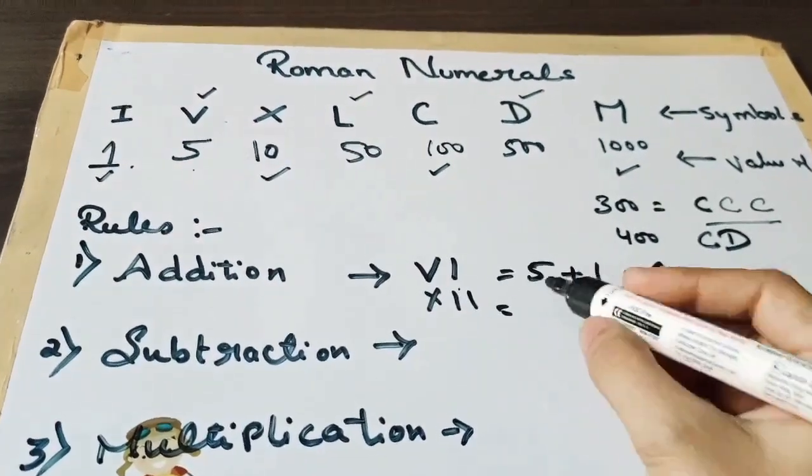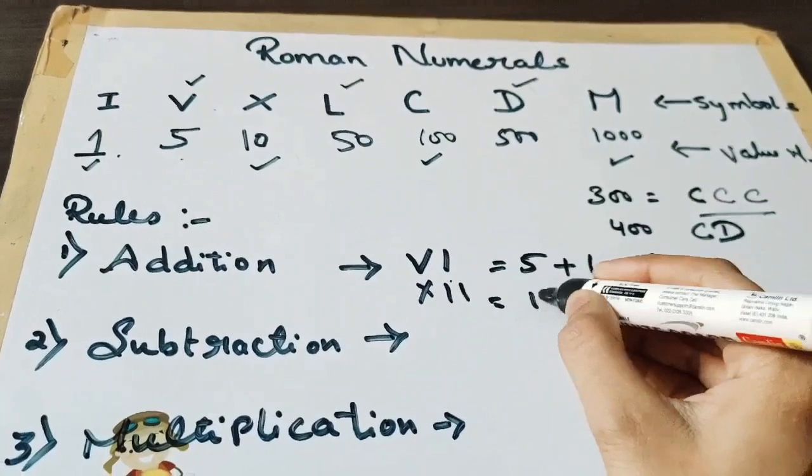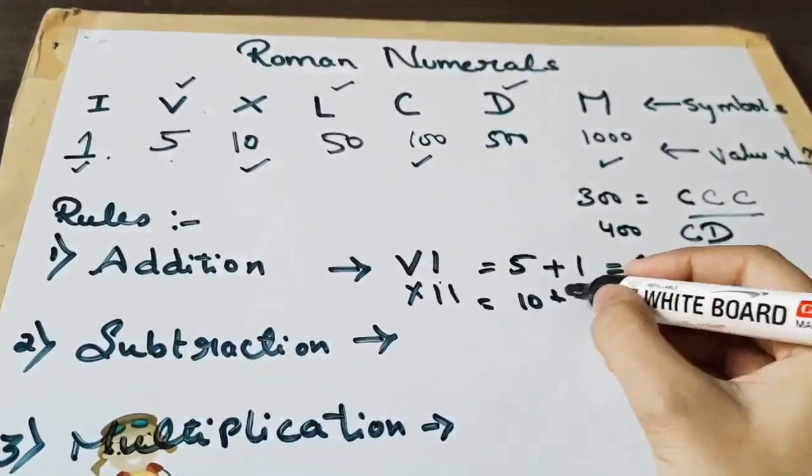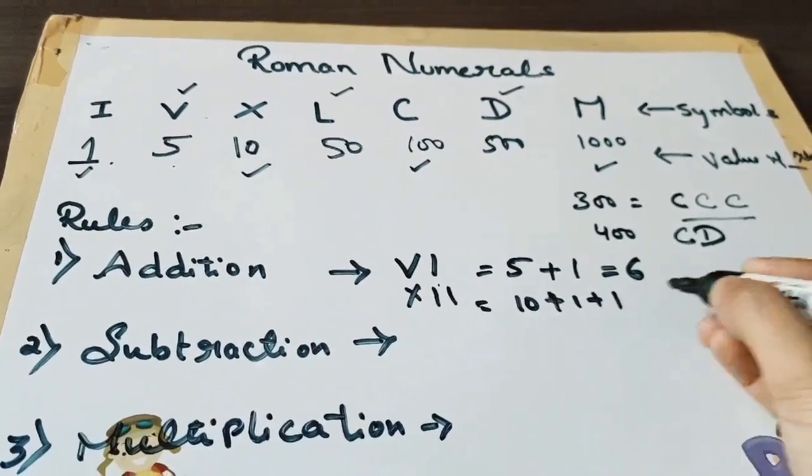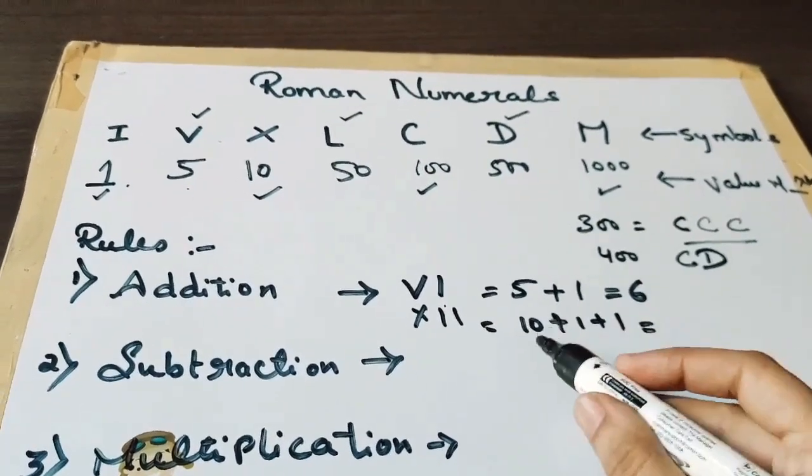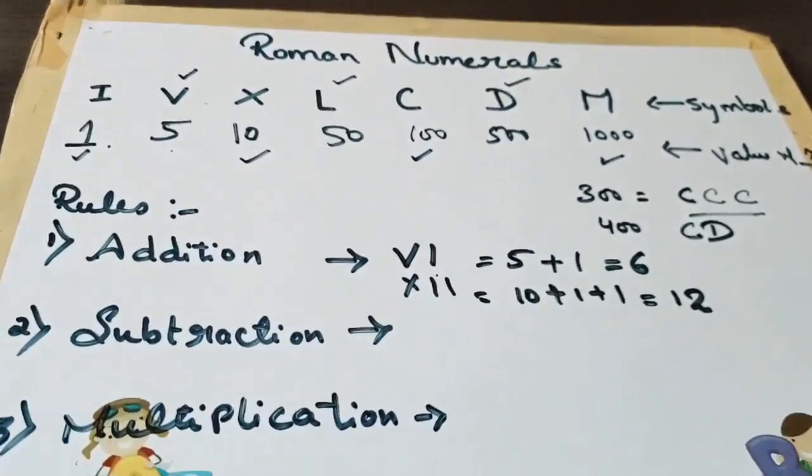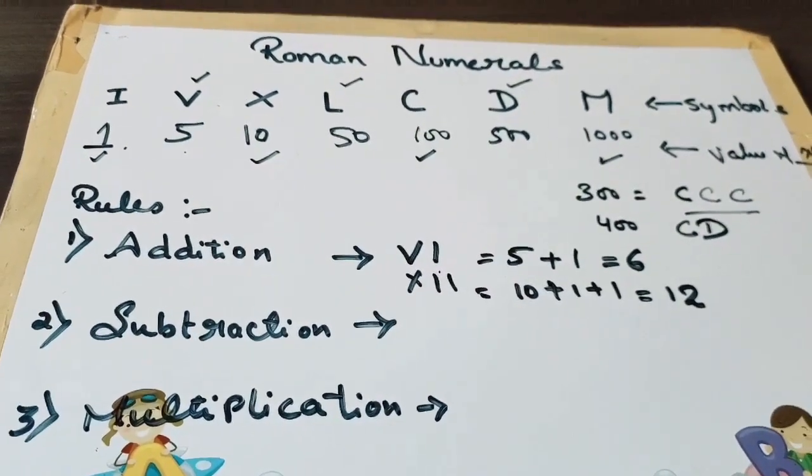Now I am taking one more example. This is X, so X value is 10, then we have 2 times I. So the value is 1 plus 1, that equals to 10 plus 1 plus 1, that is 12.